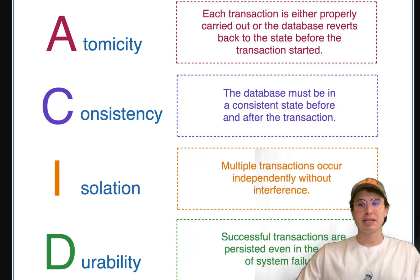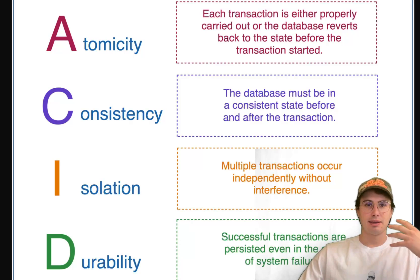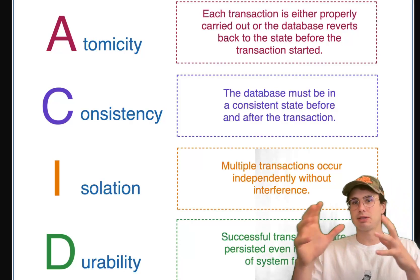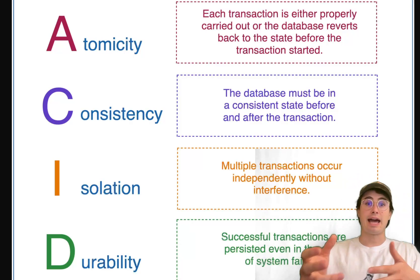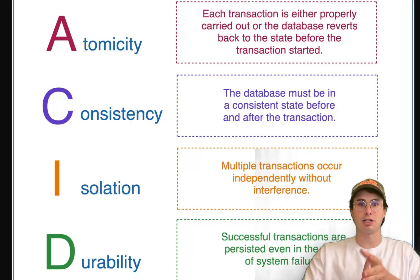So ACID is a big concept in the realm of data engineering. It's been around for really as long as data engineering has been and it's essentially a set of principles for ensuring the reliability and integrity of your data. So ACID is an acronym for atomicity, consistency, isolation, and durability.